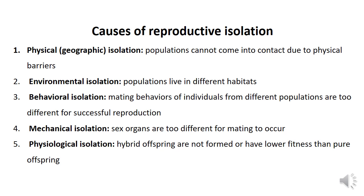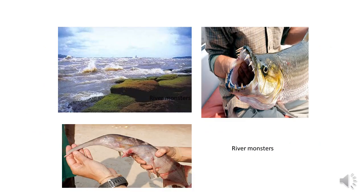These are the main causes of reproductive isolation: physical, environmental, behavioral, mechanical, and physiological isolation. As a note, a river monster — the giant freshwater stingray at roughly 400 pounds — is the largest river fish ever captured.